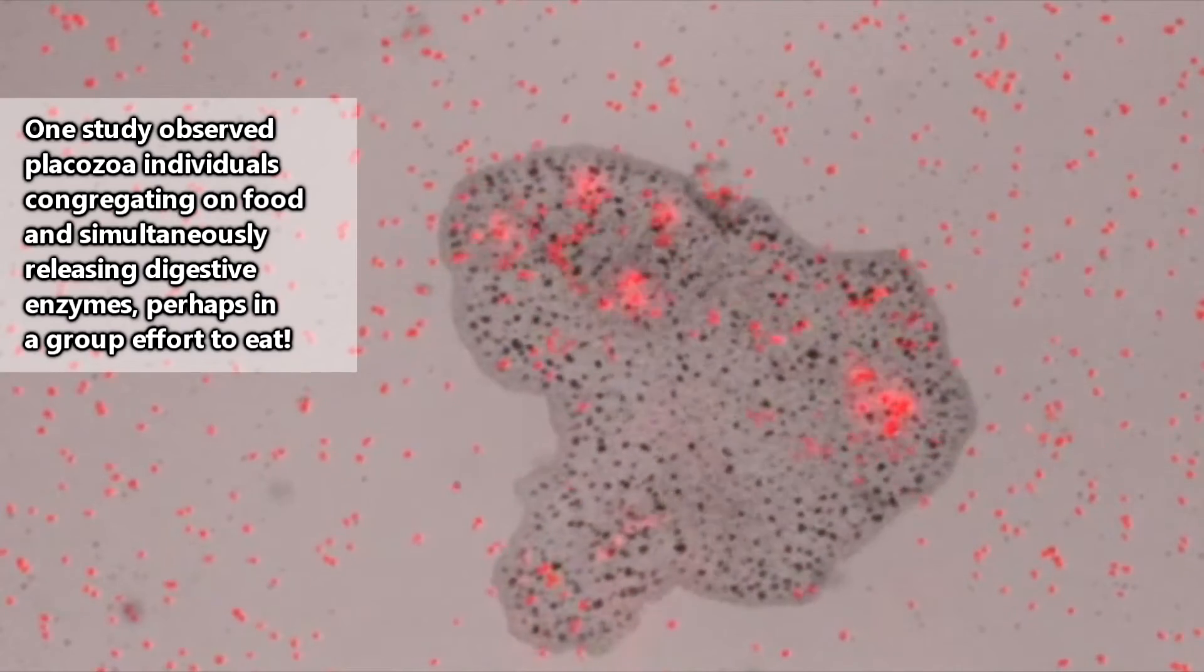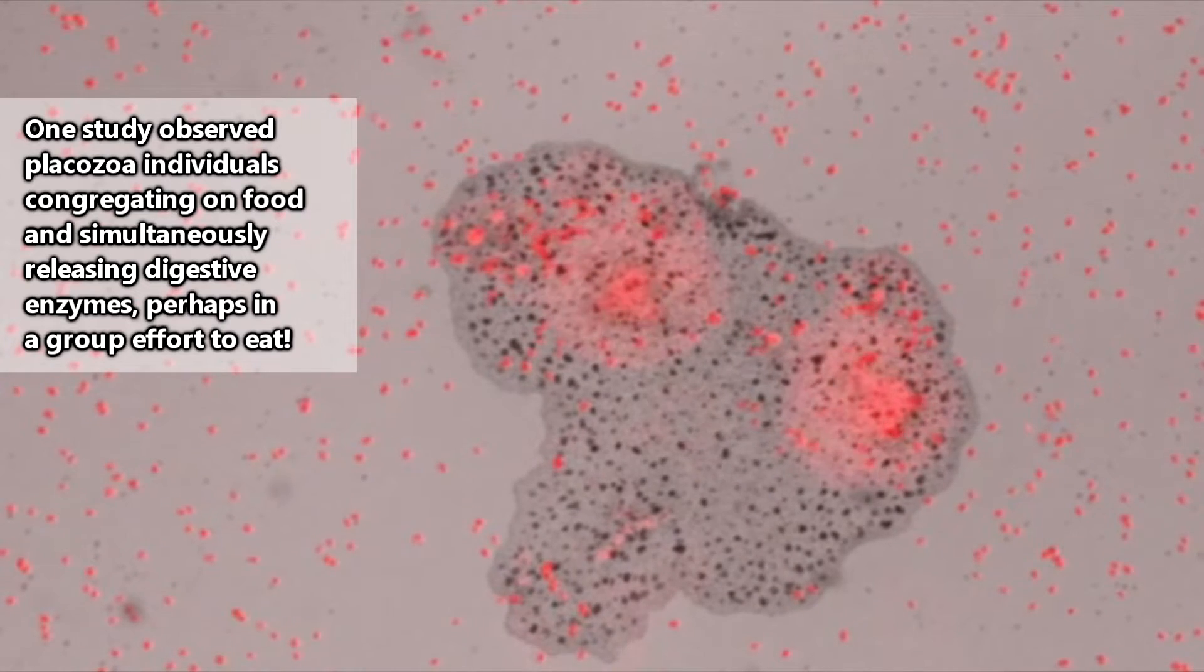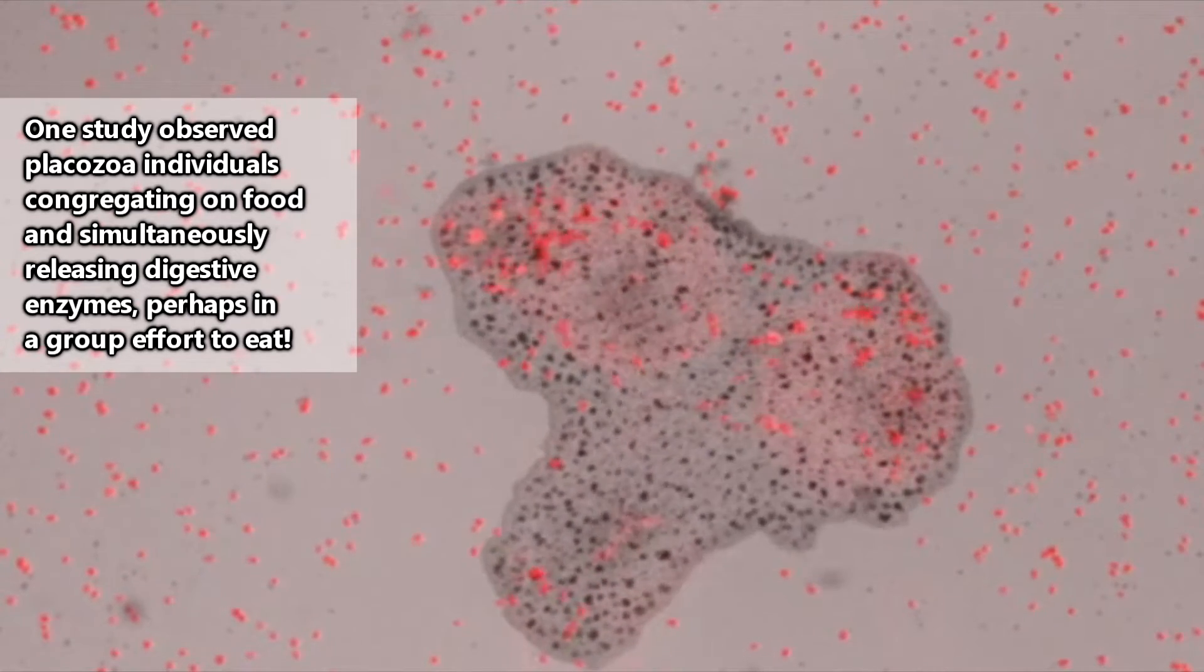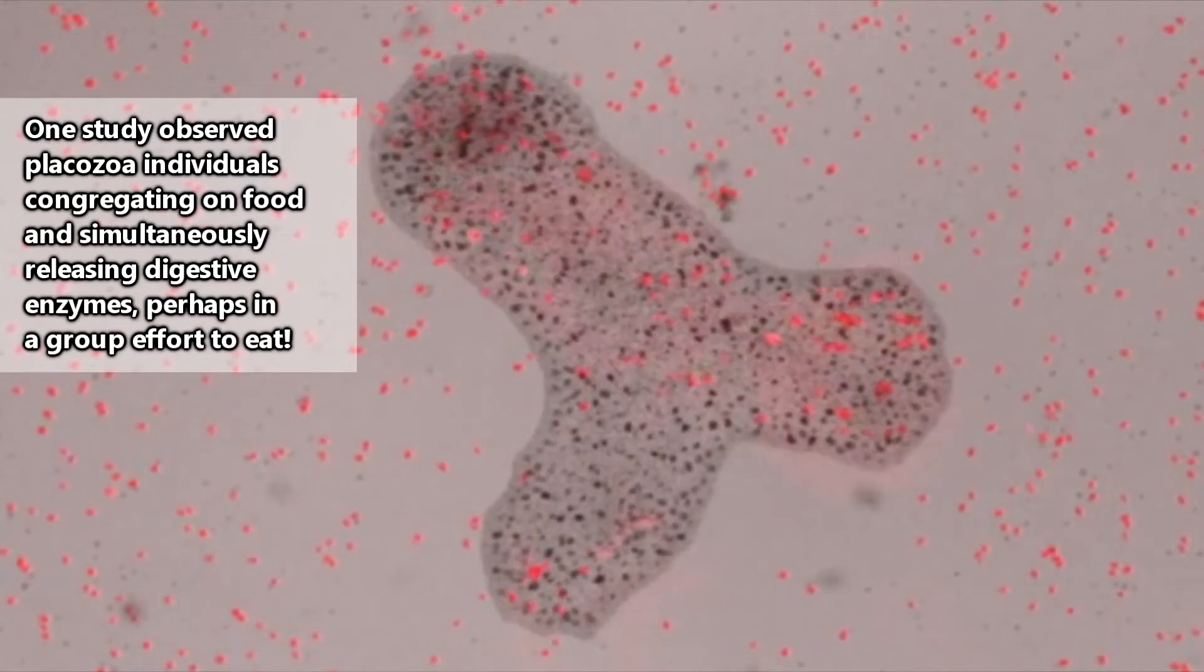Placozoa eat algae and detritus by crawling over top of their food, enveloping it, releasing digestive fluids, and then sucking up the remains.